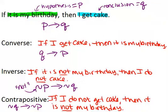This might seem like a lot of random letters, but it can just help simplify having to write out the sentences when thinking about the different combinations. Now, the last thing to realize is that just because an original sentence is true — like maybe it is true that you always get cake on your birthday — that doesn't mean the rest of them will be true. The converse often isn't true. 'If I get cake, then it is my birthday' — that's not necessarily true, because what if you got cake for some other reason? It doesn't necessarily mean it's your birthday just because you're eating cake. So the converse is often not true.